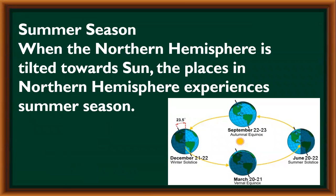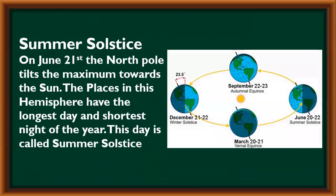Summer season. When the northern hemisphere is tilted towards the sun, the places in the northern hemisphere experience summer season. Summer solstice: on June 21st, the north pole tilts the maximum towards the sun. The places in this hemisphere have the longest day and shortest night of the year. This day is called summer solstice.